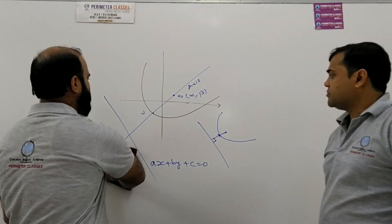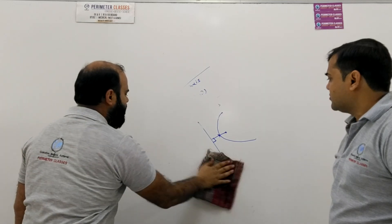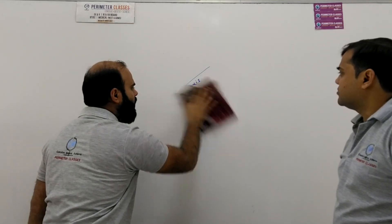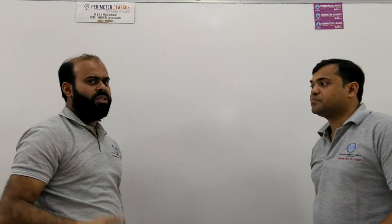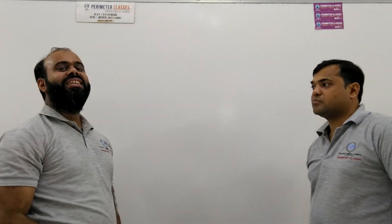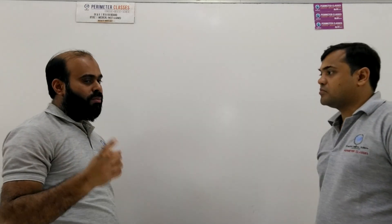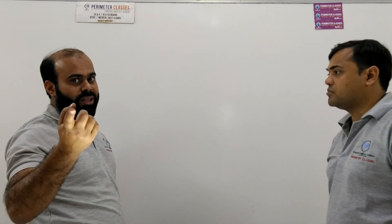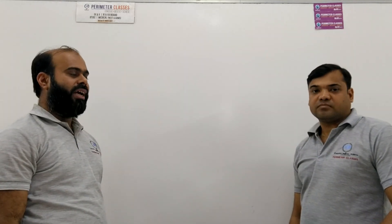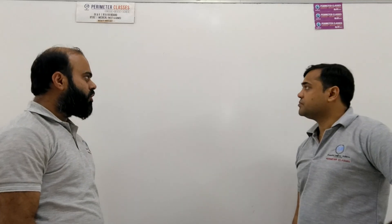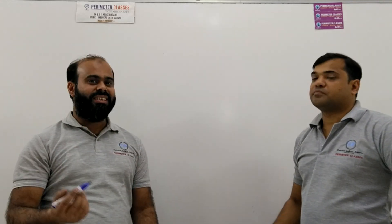In summary: for a parabola, the distance from the focus equals the distance from the directrix (eccentricity = 1). For an ellipse, the distance from the focus is less than the distance from the directrix. When we study hyperbola, we will see that the distance from the focus is greater than the distance from the directrix. So there are three types of conics based on the value of eccentricity.